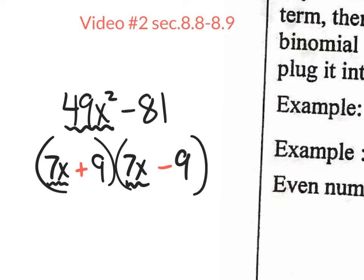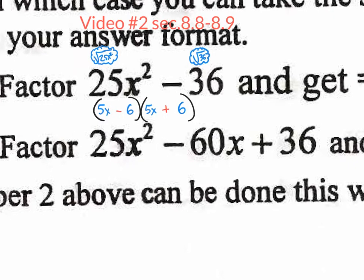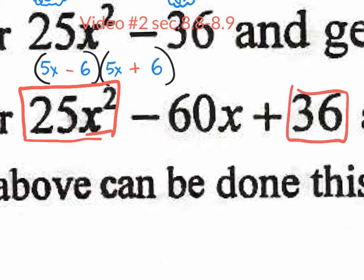Now of course, if you didn't have a perfect square term, you wouldn't be able to do this. And sometimes you do have perfect square terms and you're still not able to do it — you've got to think about it and see if it actually works. Perfect square binomials are the easiest. But we will have, as you can see on our notes here, a perfect square trinomial. It's the same a value and c value. Let's zoom in and look at this quadratic trinomial.